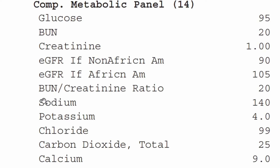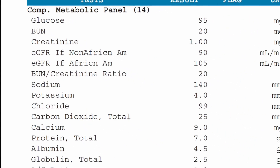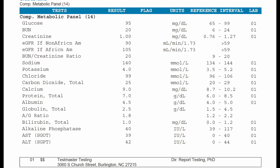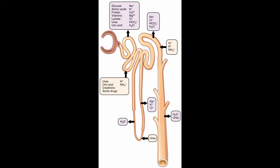In the next section we have the electrolytes: sodium, potassium, chloride, carbon dioxide, and calcium. The organ in your body that helps to regulate these electrolytes is your kidneys. There are two things going on in the kidneys — it acts as a filter, so if the filter is blocked, you'll have a buildup of things in the blood. But the kidney also does something chemically: it concentrates certain electrolytes and removes certain electrolytes based on what the body needs.